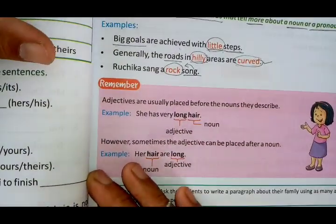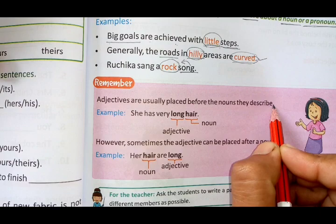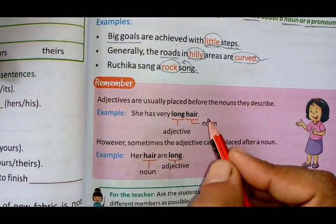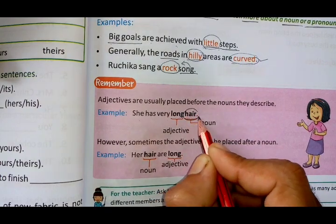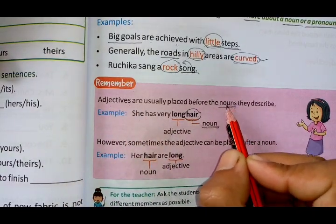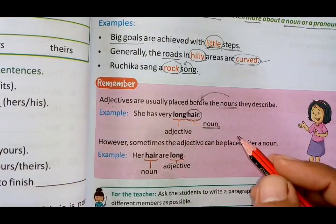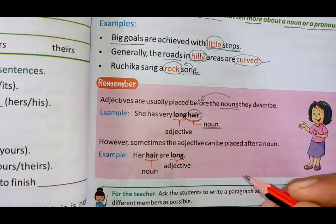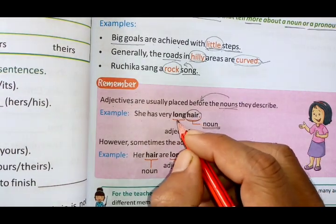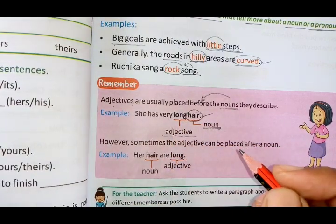Now remember: adjectives are usually placed before the nouns they describe. For example: 'She has very long hair.' Here, 'hair' is a noun, and 'long' is an adjective. Adjectives generally come before nouns. Baal toh hai — par kaisa hai? Lambe hain — long — it is an adjective.